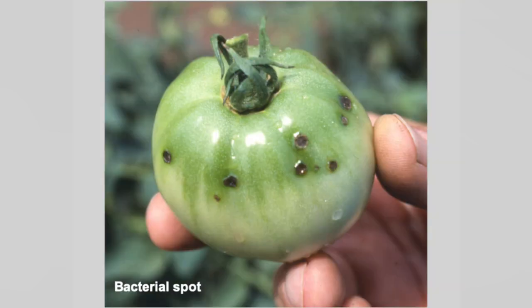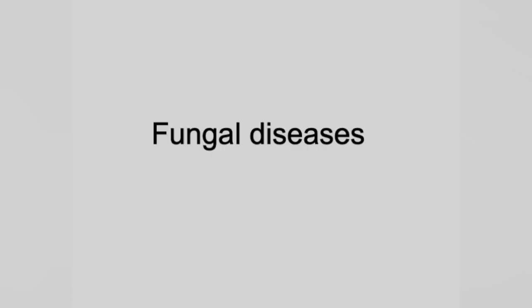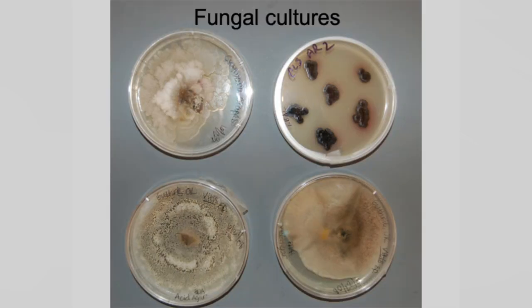Here's another bacterial spot — and then it gets scorched up. Lower leaves scorch and you can get it on the fruit. Saw a lot of that two years ago with fruit spotting. Then we have fungal diseases — this is what fungus looks like, just kind of mold.